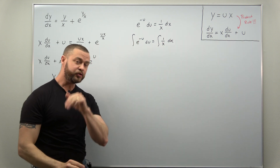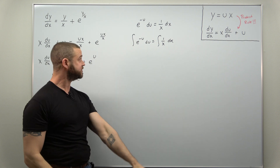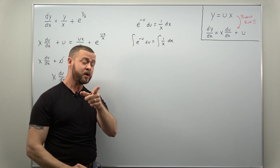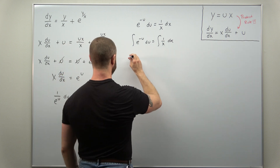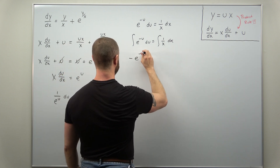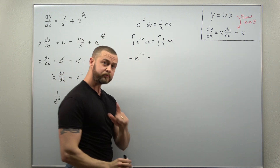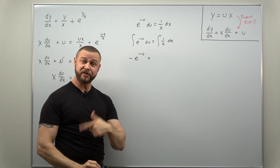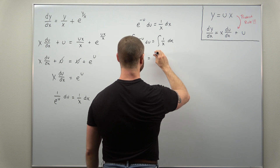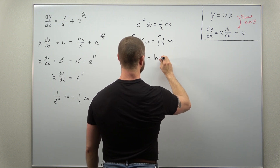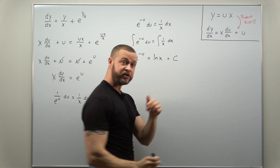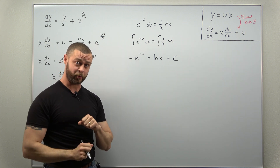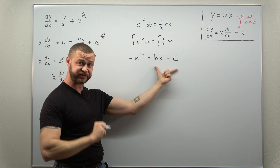The two antiderivatives are really simple. Integrating e to the negative u with respect to u gives negative e to the negative u. Integrating the right side is also very simple — that antiderivative comes out to natural log of x. Then we include our integration constant on the right side; I always include it on the x side in my differential equations course.